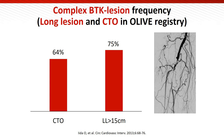In real-world practice, complex BTK lesions are frequently found. Our registry shows that 64% of lesions were chronic total occlusion, while 75% of lesions were longer than 15cm in length in BTK practice.